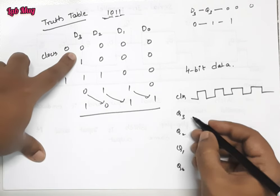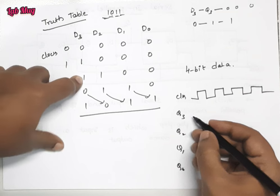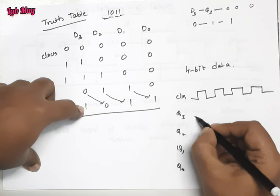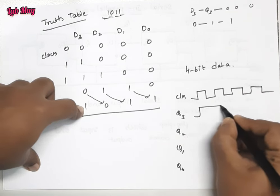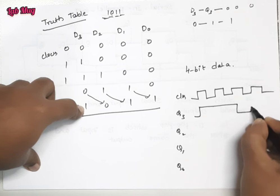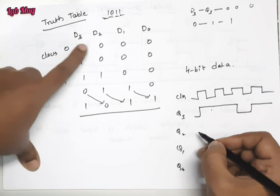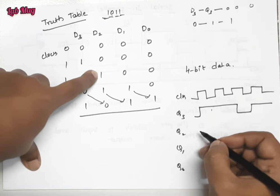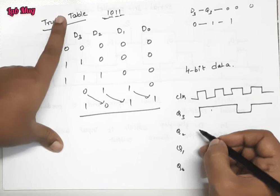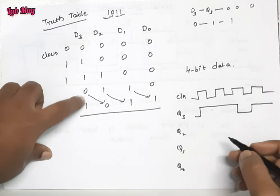Q3 output is one one zero one. So like one one and down zero and one. So this is one one zero and one. Next Q2 is zero zero one one. Sorry, zero one one zero.